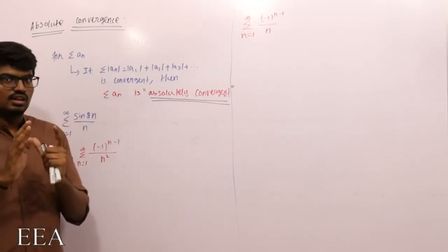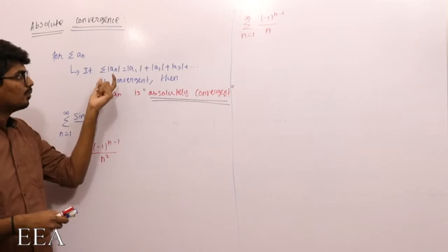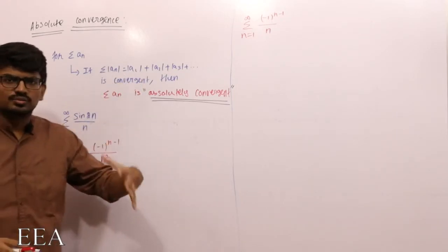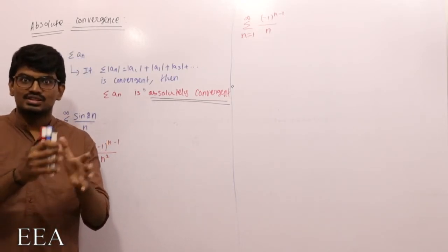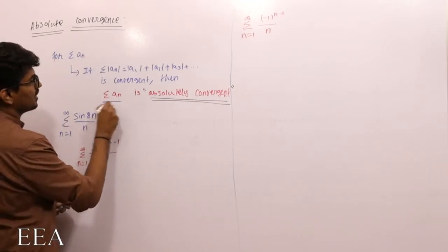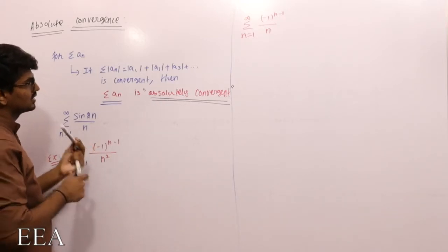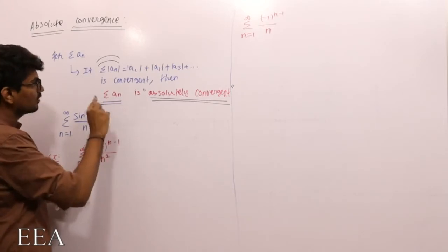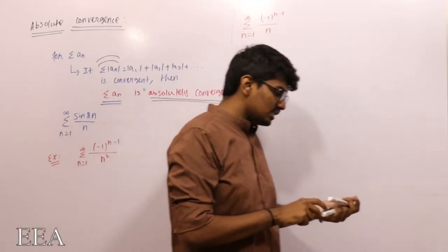Let me repeat: if you are able to prove that summation of the absolute value of a_n is convergent — you can use any method for proving it — then summation of a_n is absolutely convergent. If I am able to prove summation of |a_n| as convergent, then summation of a_n will be absolutely convergent.